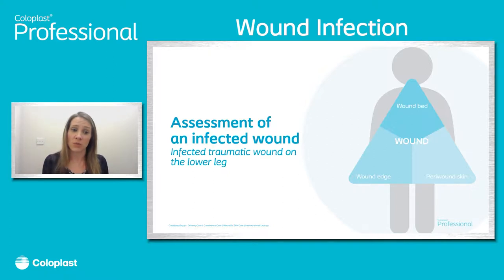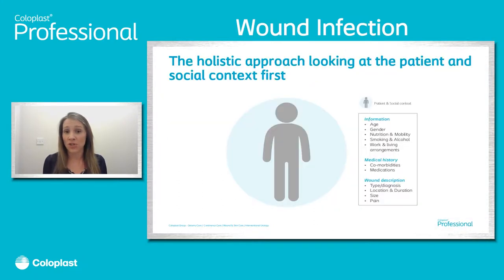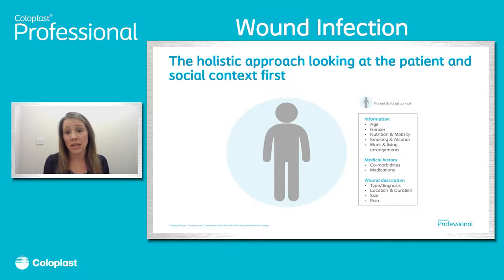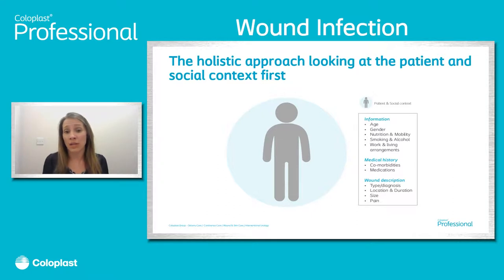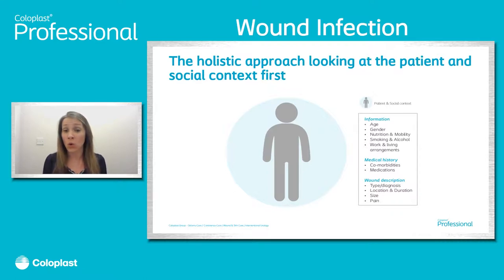Looking at the assessment of an infected wound, we have a case study of an infected traumatic wound on the lower leg. The holistic approach looks at the patient and social context first: age, gender, nutritional status, mobility, whether they smoke or drink, working and living arrangements, comorbidities, medications, and previous surgeries. In this case, we're looking at a 79-year-old with osteoporosis and rheumatoid arthritis receiving cortisone therapy, severely handicapped by arthritis and osteoporosis, living at home with self-care. On day one, the image shows some sloughy tissue, medium levels of exudate, and slight excoriation to the wound edge.